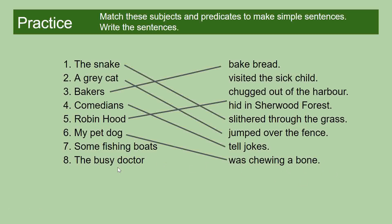Some fishing boats chugged out of the harbour. The verb is 'chugged' — you can tell because it's got 'ed' on the end, as lots of regular verbs do. 'Chugged' is how a boat moves — these smaller boats jitter and move slowly when the motor's going. The noun is 'harbour' because we have the article 'the' before it, which is always before the noun.